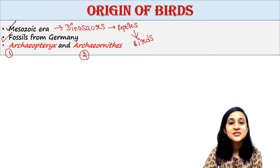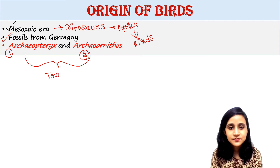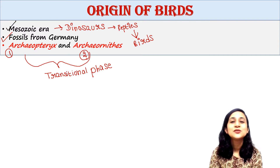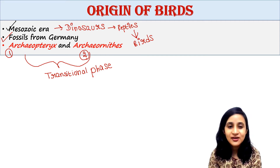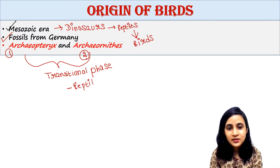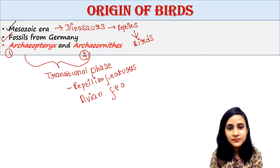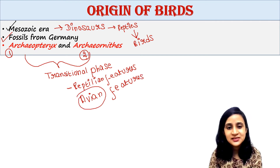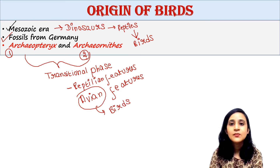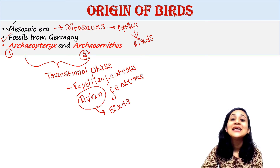Those two fossils are: first is Archaeopteryx and second is Archaeoramethes. They represent a transitional stage between reptiles and Aves, because they show both reptilian features as well as Avian features — Avian meaning birds.